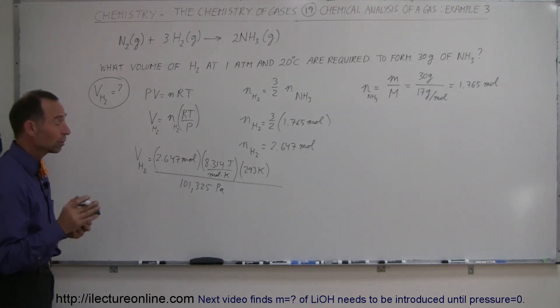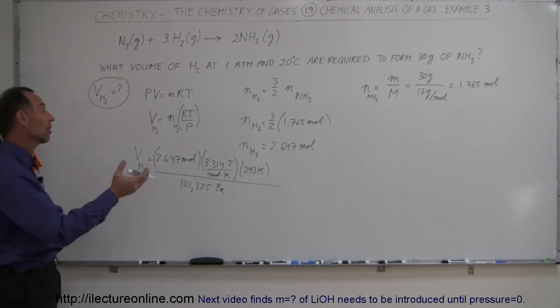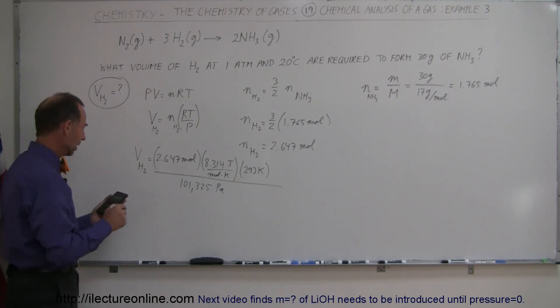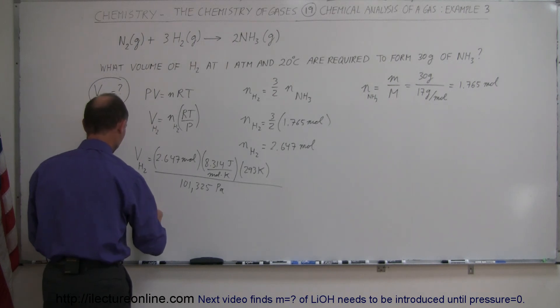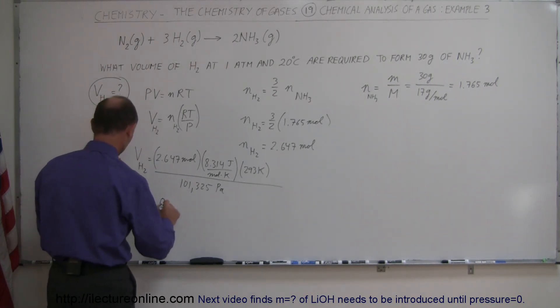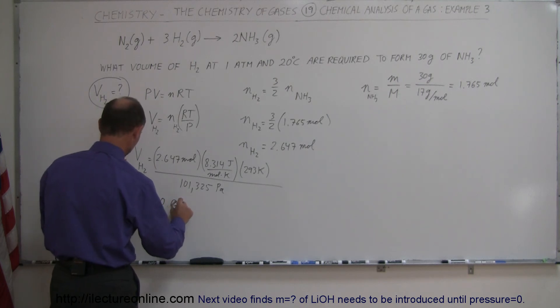Now that of course will give us the volume in cubic meters which are going to be easily transferred to liters if you like. So times 8.314 times 293 divided by 101,325 equals... It looks like the volume of the gas required to produce that much ammonia is 0.0636 meters cubed.